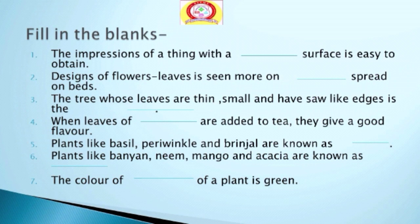Question three: the tree whose leaves are small, thin and have saw-like edges is the dash. Fourth: when leaves of dash are added to tea, they give a good flavor. Five: plants like basil, periwinkle and brinjal are known as dash. Six: plants like banyan, neem, mango and acacia are known as dash.